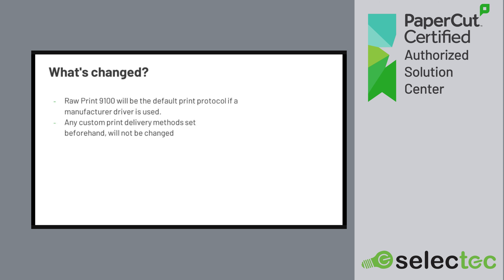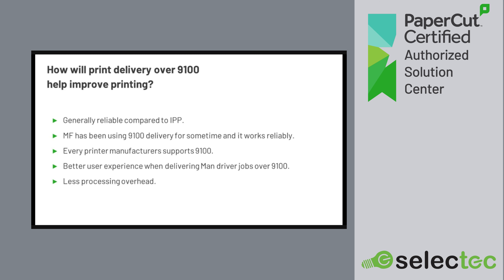Changes can be made in Hive under the delivery methods. How will print delivery over 9100 improve printing? It's a lot more reliable than IPP — some OEMs struggle with IPP and processing jobs, there are limitations with their IPP stack, and for a lot of OEMs the IPP hasn't changed in years. 9100 has been a really stable protocol. Every printer manufacturer supports Port 9100. It's also a better user experience — print jobs process a lot faster, multiple jobs can be processed quicker, and there is less processing overhead.